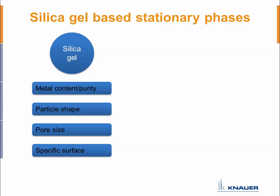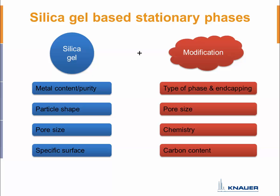But this is not everything. Most often you don't use bare silica gel but a modified one. So you also have to look at the modification — its type, the style of end capping, or whether there is an end capping at all, especially in reversed phase mode. The pore size is also affected by modification: if you bring chemistry onto the surface, the pores get smaller. For a reversed phase, the carbon content of the phase is also really important when comparing columns. All these points together define the selectivity of your stationary phase, which is why there are so many different columns on the market.